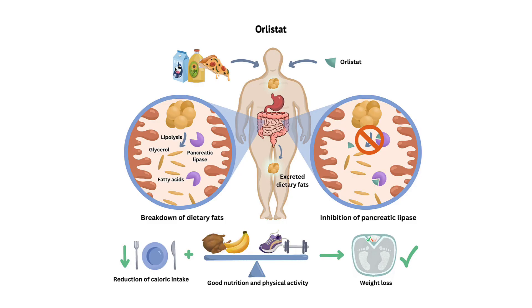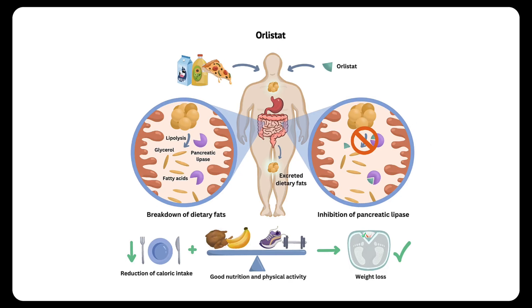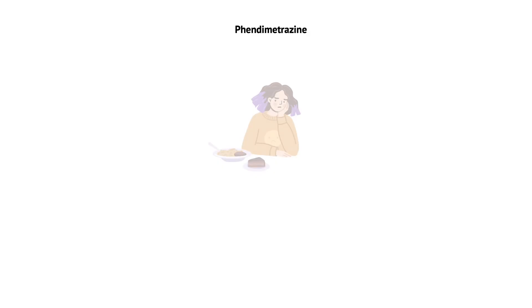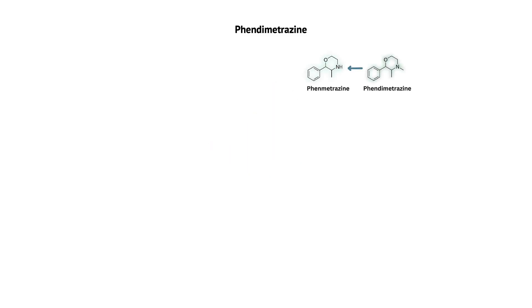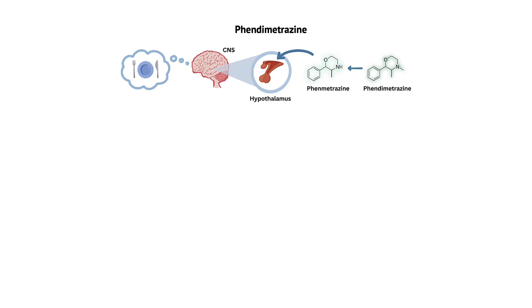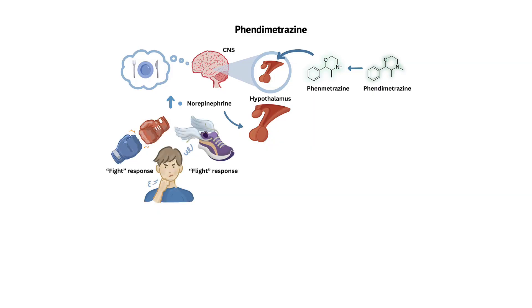Let's move on to another class of anti-obesity drugs — phendimetrazine, a sympathomimetic amine belonging to the drug class of anorectics, or appetite suppressants. Phendimetrazine functions as a prodrug, meaning that it is metabolized in the body to an active compound called phendimetrazine, which is responsible for the drug's appetite-suppressing effects. The mechanism of action involves the activation of the central nervous system, particularly the hypothalamus, which is the brain region that controls appetite. By increasing the levels of norepinephrine in the hypothalamus, phendimetrazine stimulates the fight-or-flight response, leading to increased energy expenditure and decreased food intake.